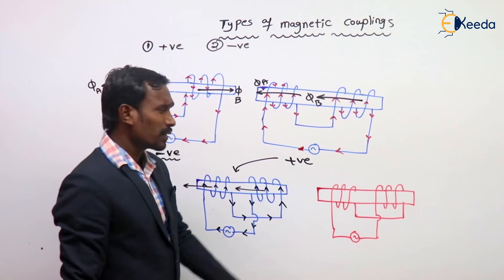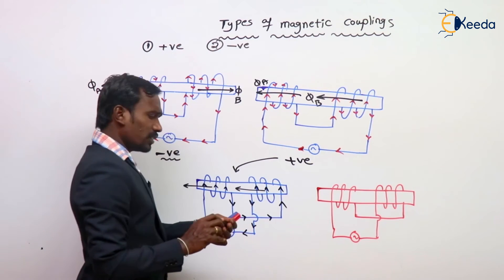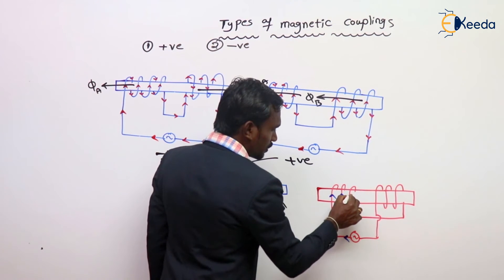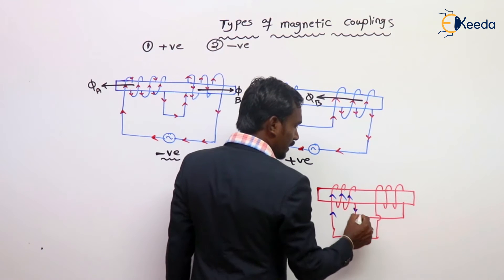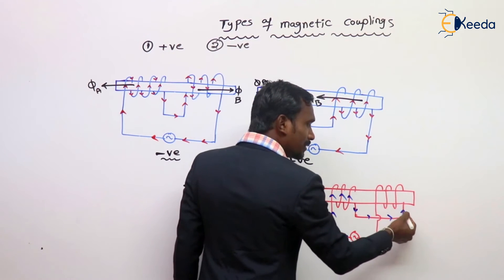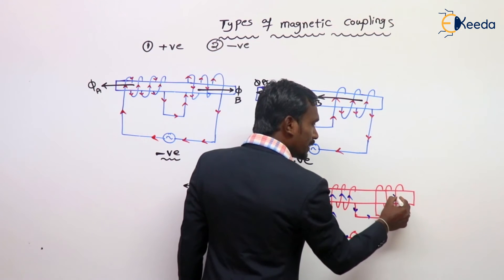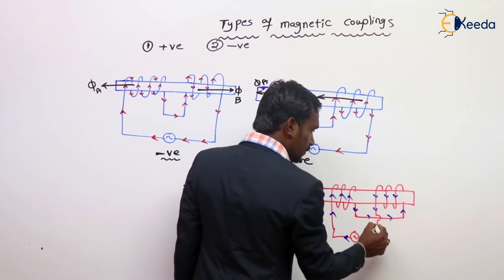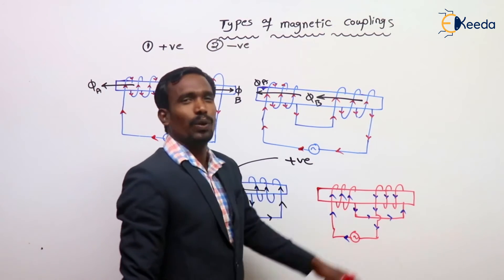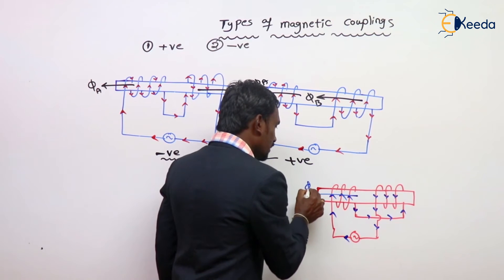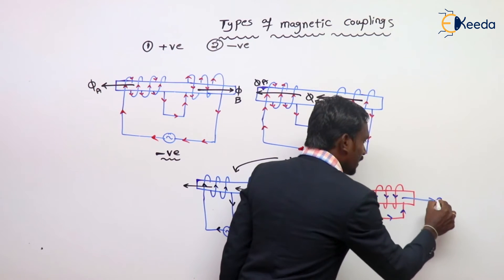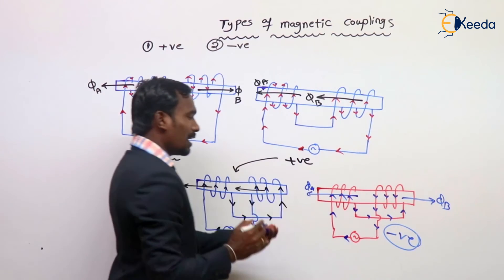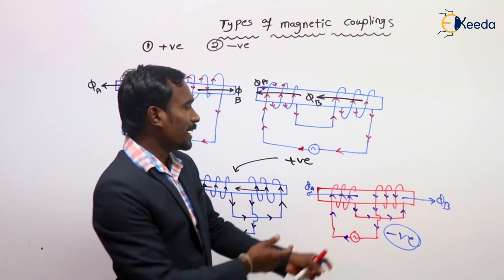Let's see this. What is the current direction? So upwards, upwards, upwards. Here upwards, nothing but here downwards. Inside the rod upwards, but here downwards. Inside the rod upwards, but here downwards. Here upwards, here downwards. One is flux in this direction and this is flux in this direction — both are opposite to each other. If both are opposite to each other, then this is the negative magnetic coupling.